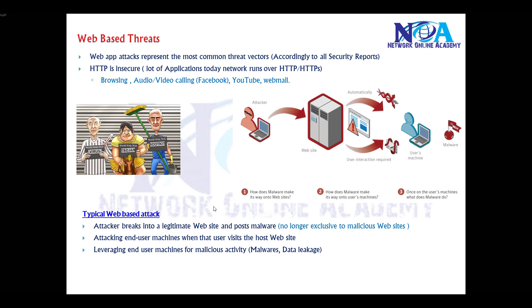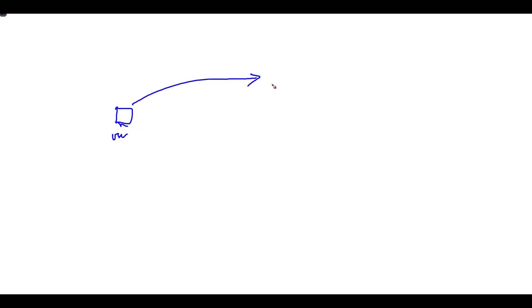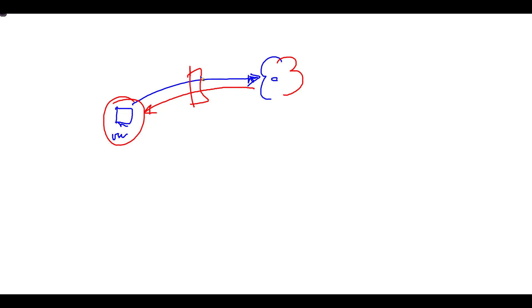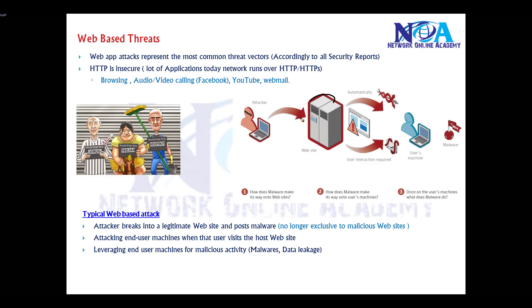Possible web-based threats include an end user visiting a specific website that contains a lot of malware, downloading malicious traffic onto their machine. Typically, firewalls or other devices are configured to deny traffic from specific URLs known to contain malware. However, another possibility is that the end user may actually download malware from valid, legitimate websites.